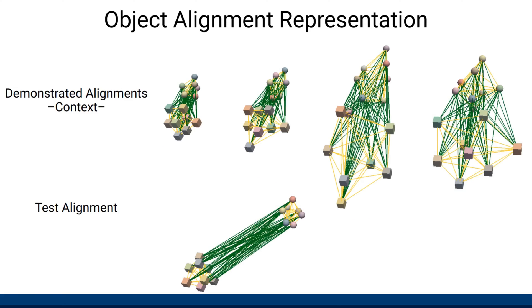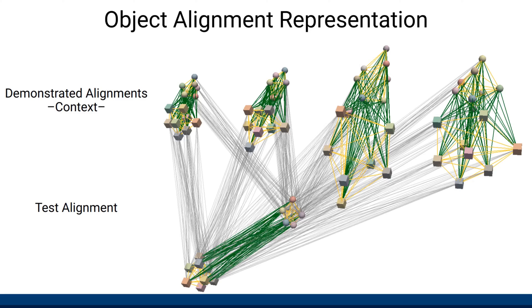Finally, by connecting demonstrated alignments to the test alignment using directional edges, we create a heterogeneous graph representation that is suitable for making predictions about whether the test alignment is consistent with the demonstrated ones.